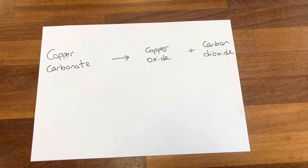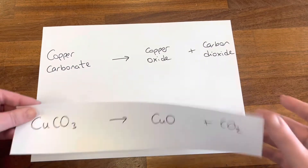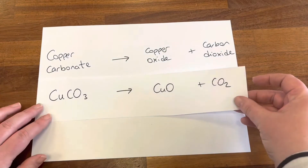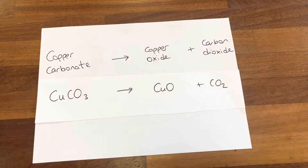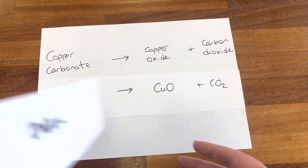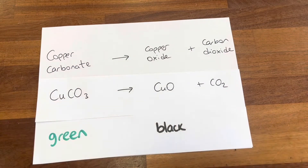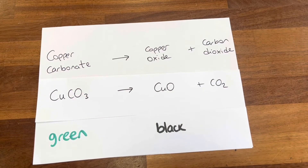As you saw in the experiment, we started with copper carbonate — chemical formula CuCO₃. When we heated it, it broke down into copper oxide and carbon dioxide. You saw the colour change: copper carbonate is green and copper oxide is black.